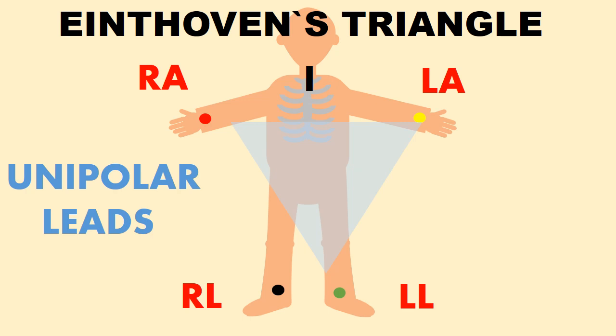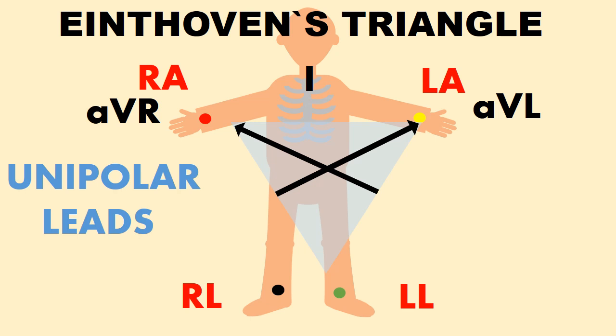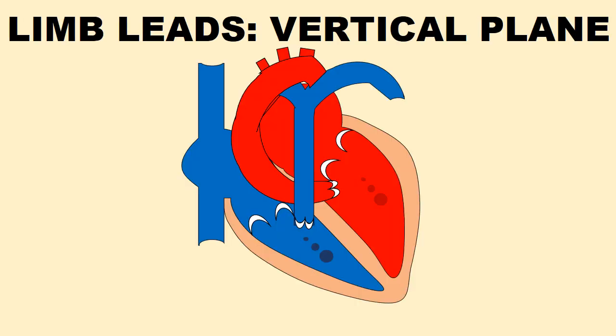These leads are AVR, where the electrode is attached to the right arm; AVL, where the electrode is attached to the left arm; and AVF, where the electrode is attached to the left leg. The limb leads see the heart in a vertical plane.